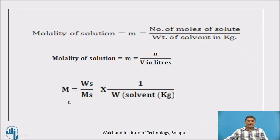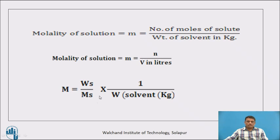Molality equals Ws upon Ms multiplied by 1 upon W, where W is the solvent in kg. So Ws is weight of solute, Ms is molecular weight of solute, and W is weight of the solvent in kg.